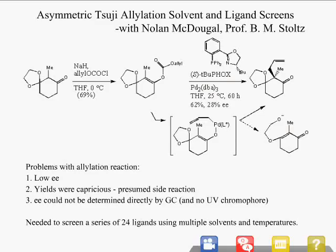This is research done in the Stoltz Group at Caltech with postdoc Nolan McDougall. He had an allylation where he was trying to get just one mirror image enantiomer of the product. When Nolan brought it to the catalysis center, the reaction had low yield and low EE. We needed to find the best ligand and best solvent. We also had a low yield presumed to be due to a five-membered ring ketal with two oxygens that could open and lead to byproducts. We needed to determine EE by UV on an SFC supercritical fluid chromatography system, but the product lacks a strong UV chromophore.